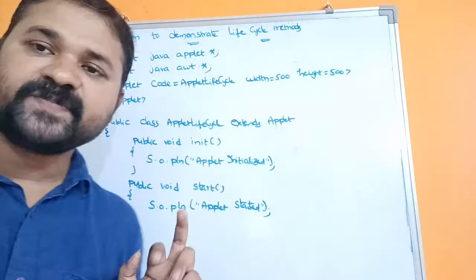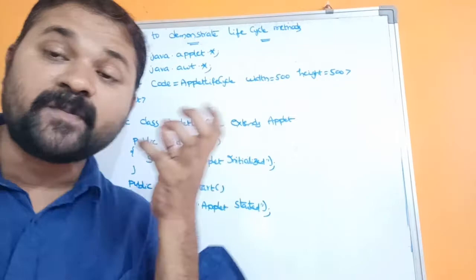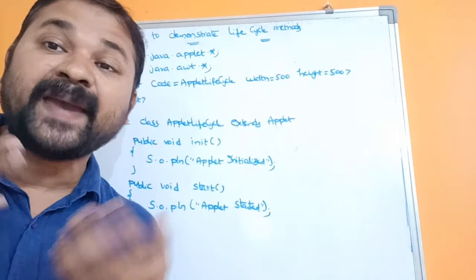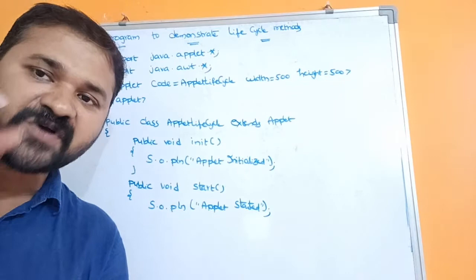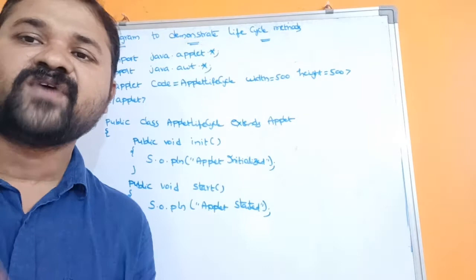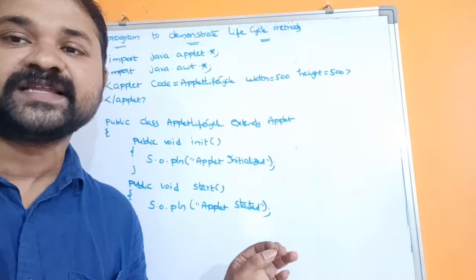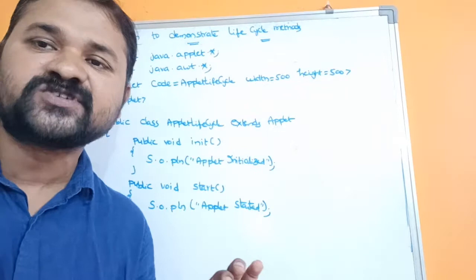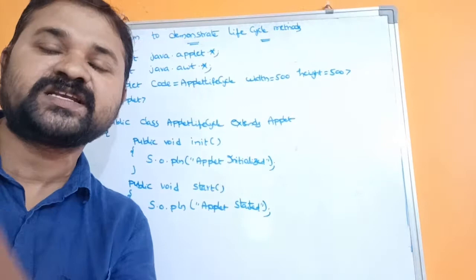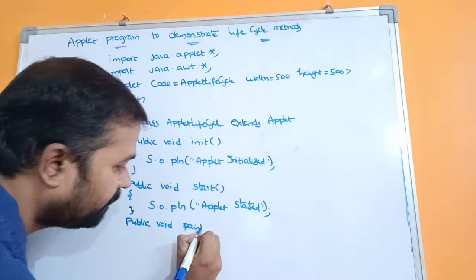If we write anything in the init method, start method, stop method, or destroy method using System.out.println, then the corresponding content will be displayed in the command prompt. If we want to display something on the applet itself, we have to use the paint method. In the paint method we have the graphics class object, and with its help we can display content on the applet. In the paint method we should not use System.out.println.